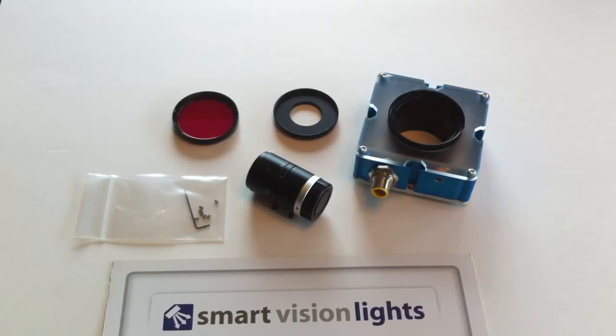This video illustrates the four different mounting options available when using Smart Vision Light's Easy Mount Ring Light series. The first two involve mounting the light directly to aluminum extrusion.